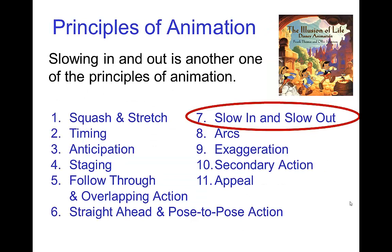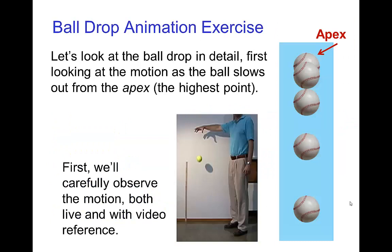Slowing in and slowing out is another one of the principles of animation, so that's discussed quite a bit. The ball drop exercise is a great example of looking at the motion of something that's slowing out. You start at the apex, and as the ball is falling it's gaining speed, so it's slowing out from the apex.